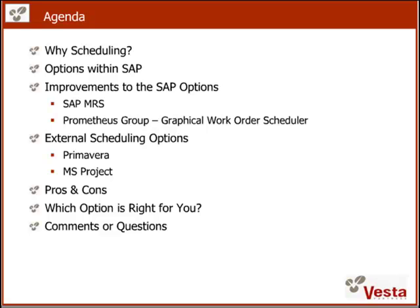Third-party companies have done improvements to the standard SAP options and allow you improved scheduling within the SAP system. If that's still not enough for you, you can use external scheduling products like Primavera and MS Project for scheduling your workload in an external system. What you need in order to do that is an interface between these two systems that transfers work order information out of SAP into the external scheduling system and back. We want to look at pros and cons of the individual options and also look at which option is right for you.